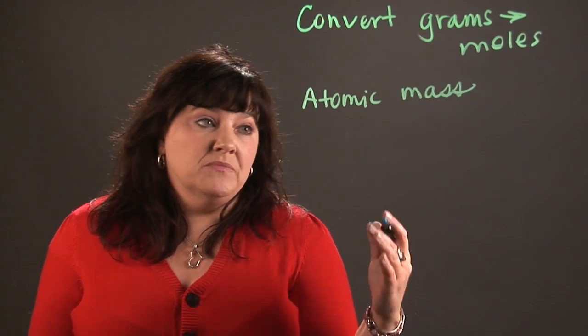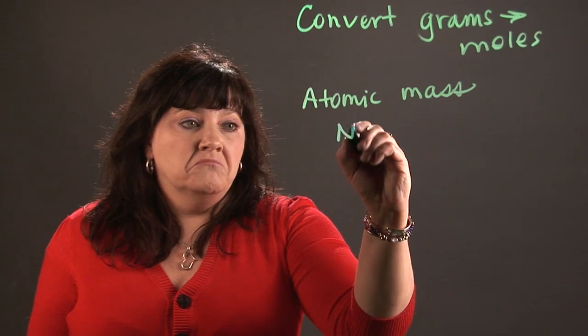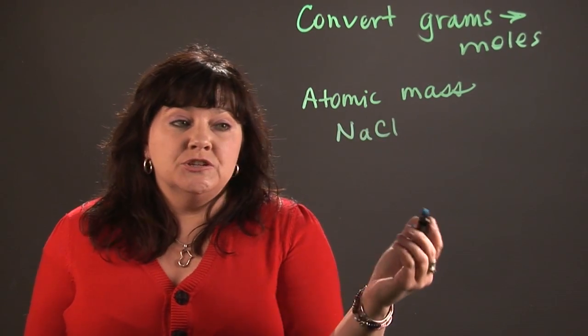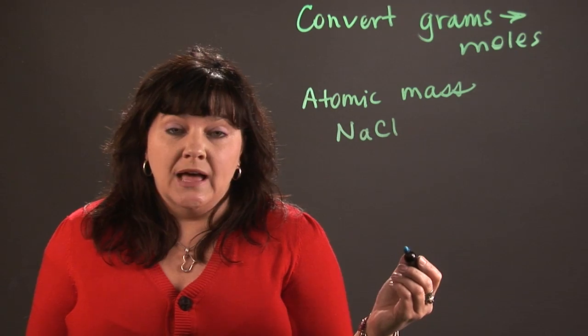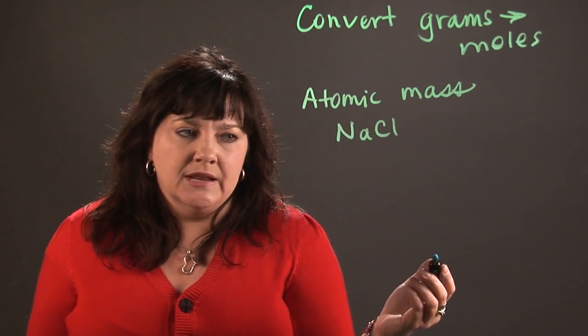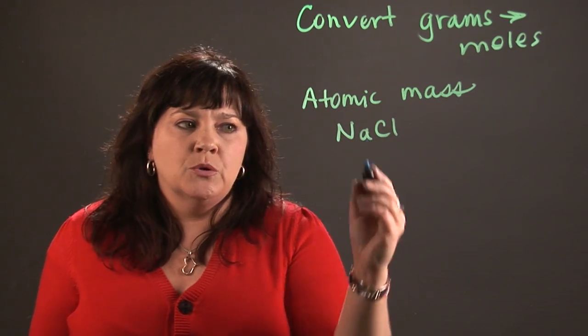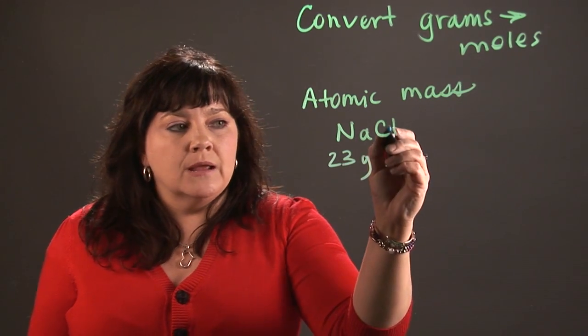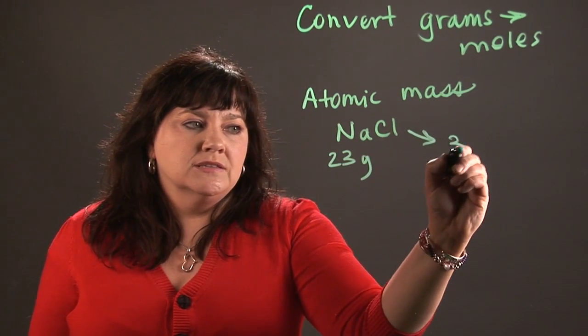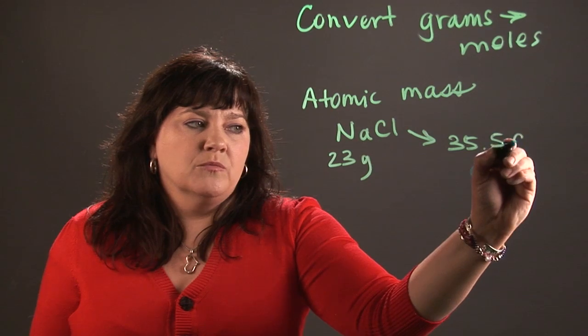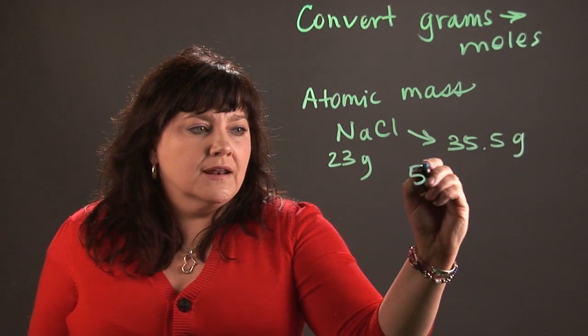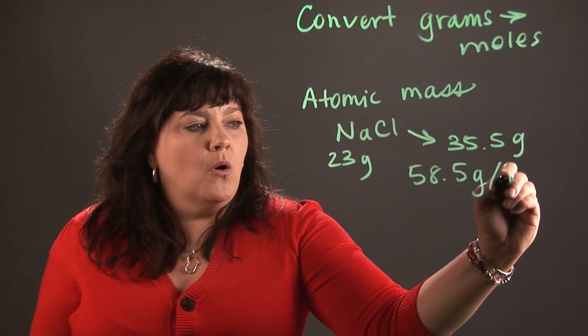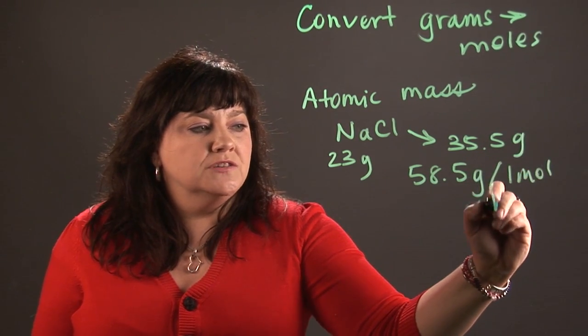So each compound, something like NaCl, which is table salt, the mass of that is determined by the mass of each of the individual elements in there. I would go to the periodic table and look up how much sodium weighs and it actually weighs 23 grams per mole. And how much chlorine weighs, that's going to be 35.5 grams per mole. I would add those together and I would have 58.5 grams in one mole of salt.